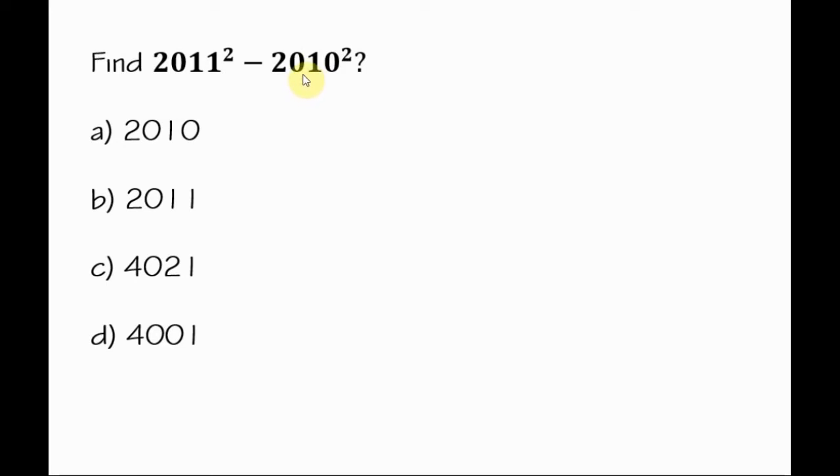Let me show you how we can calculate this very quickly. As you can see here, we have something squared minus something squared. This is the so-called difference of squares, so we have x squared minus y squared, which is equal to x plus y times x minus y.